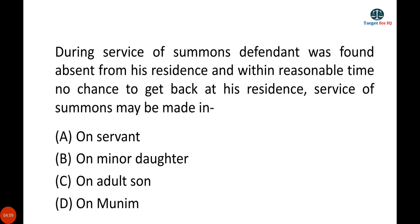Option A — servant — is incorrect as a servant is not a member of the family. Option B — minor daughter — is incorrect as an adult member is required. Option D — munim — is incorrect as munim is not a member of the family. Therefore, Option C — adult son — is correct.